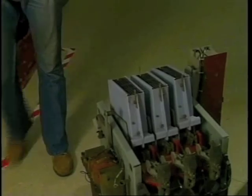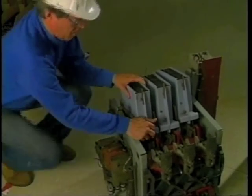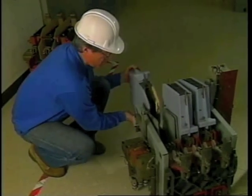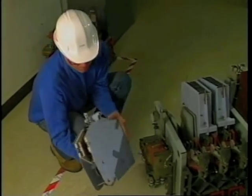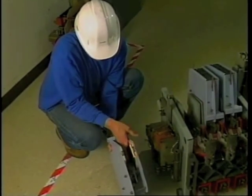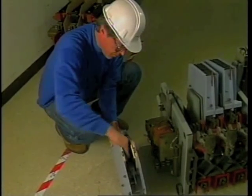All contactors have arc chutes that interrupt arcs during fault conditions. The arc chutes on contactors are smaller than those found on circuit breakers and should be visually checked following each fault condition and during routine maintenance. This should be performed while the contactor is de-energized and isolated from all control and backfeed power sources.